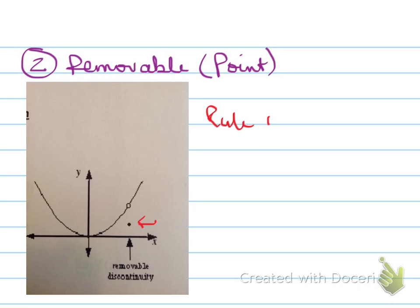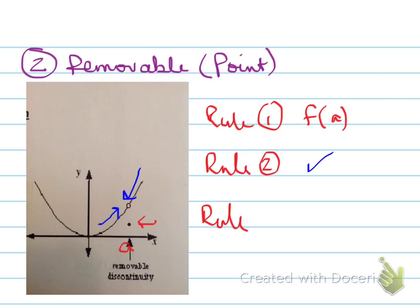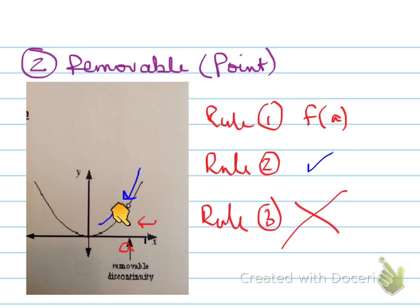Number two: removable or point discontinuity. If we take the limit approaching from the left side and from the right side, they both have a value — so rule two exists. Rule one also exists because there is a value at that point. However, rule three fails because the limit at that point is not the same as the actual function value at a. Because of that, it is known as a removable or point discontinuity.